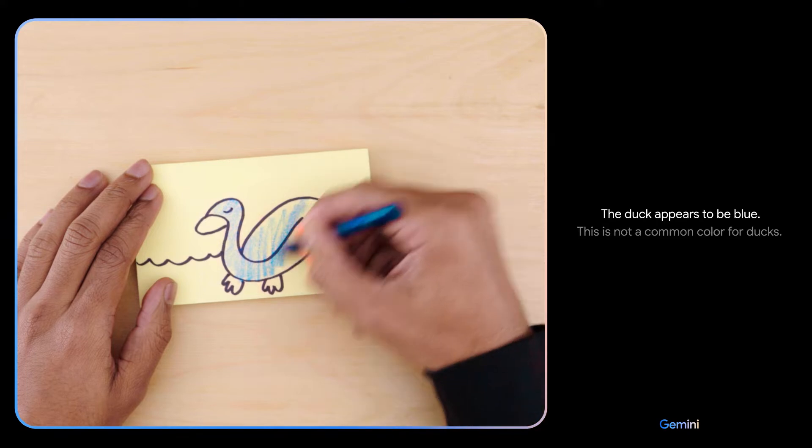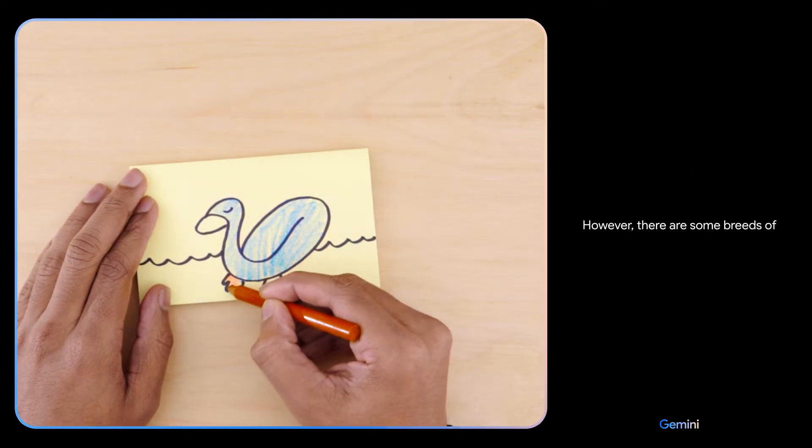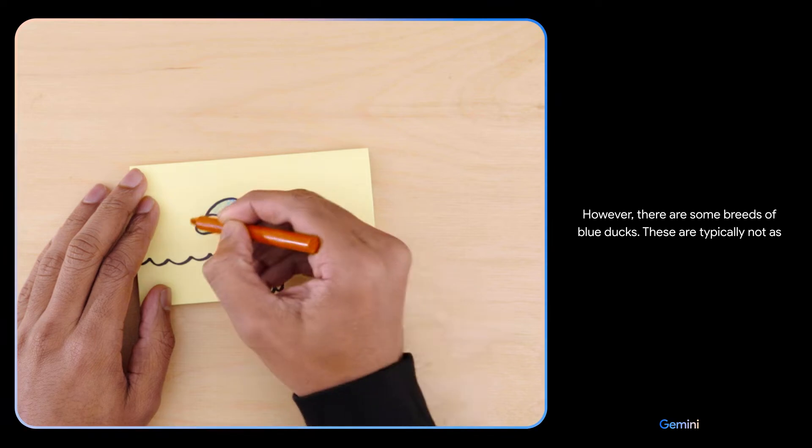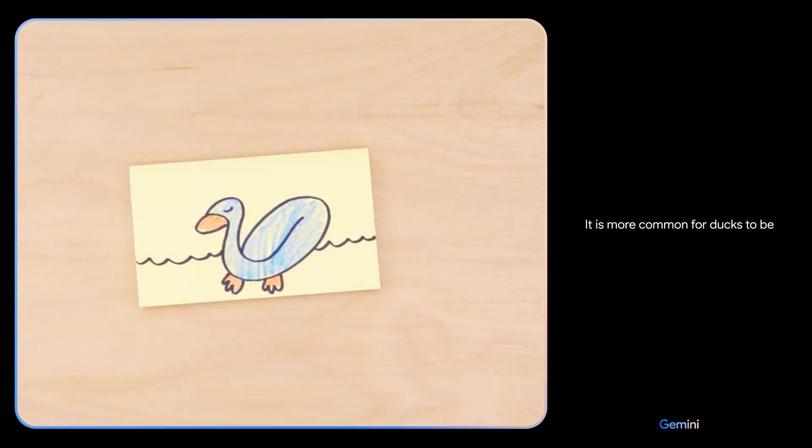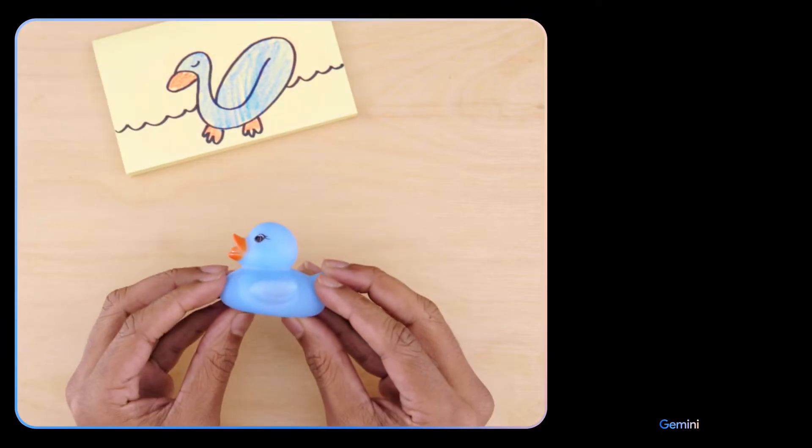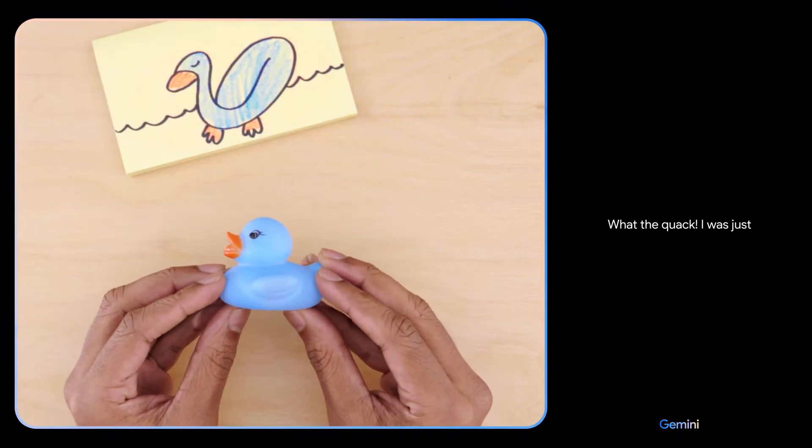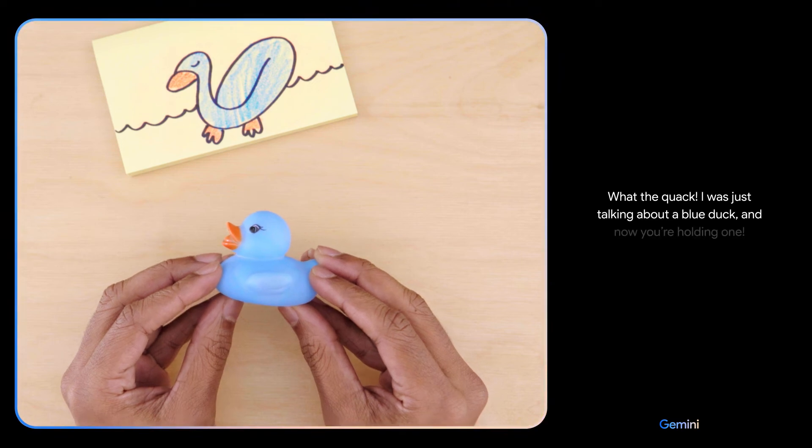The duck appears to be blue. This is not a common color for ducks. However, there are some breeds of blue ducks. These are typically not as common as other duck breeds. It is more common for ducks to be brown, black, or white. Are you sure? What the quack! I was just talking about a blue duck and now you're holding one. It looks like blue ducks are more common than I thought.